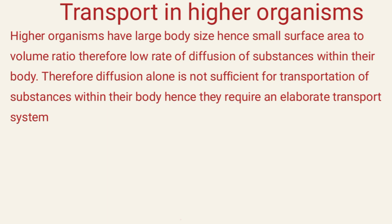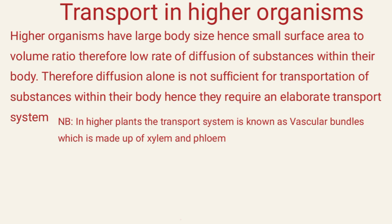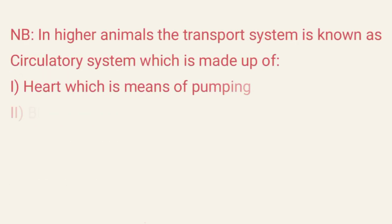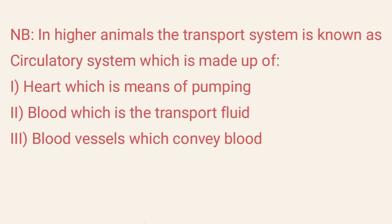Therefore, higher organisms require an elaborate transport system. In higher plants, the transport system is called the vascular bundle, which is made up of xylem and phloem. Xylem conducts water and mineral salts from the soil to the other parts of the plant, while phloem translocates soluble manufactured food substances from the leaves to the other parts of the plant. In higher animals, the transport system is called the circulatory system, which is made up of the heart — which is the means of pumping — blood, which is the transport fluid, and blood vessels, which help in conveying blood.